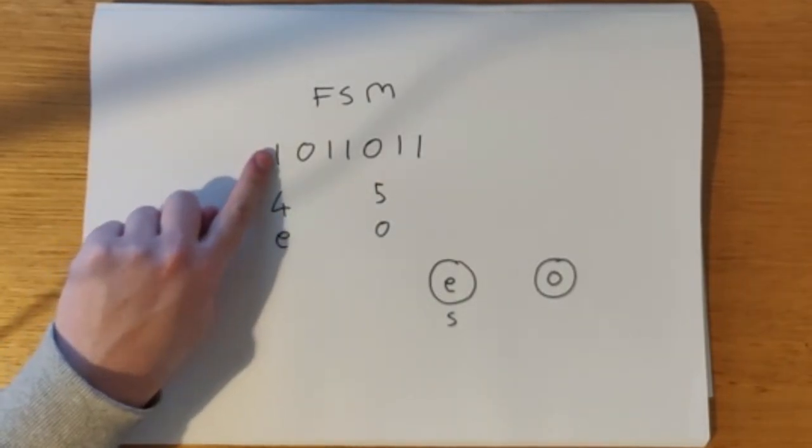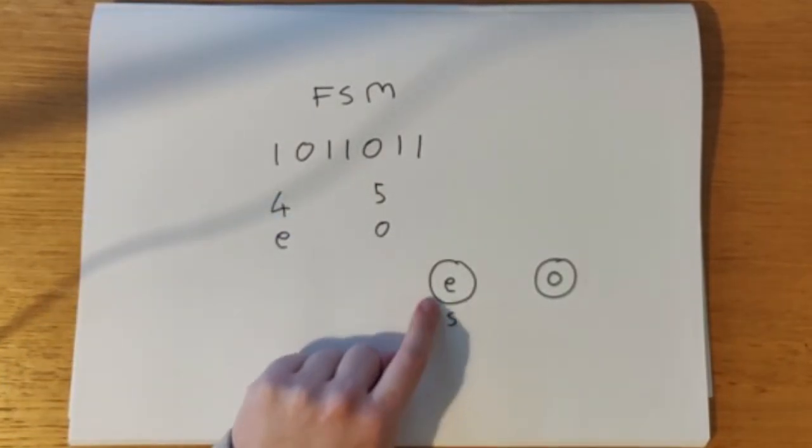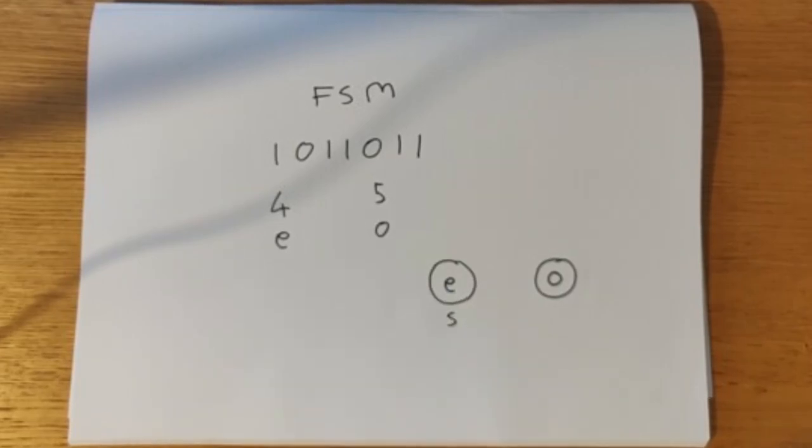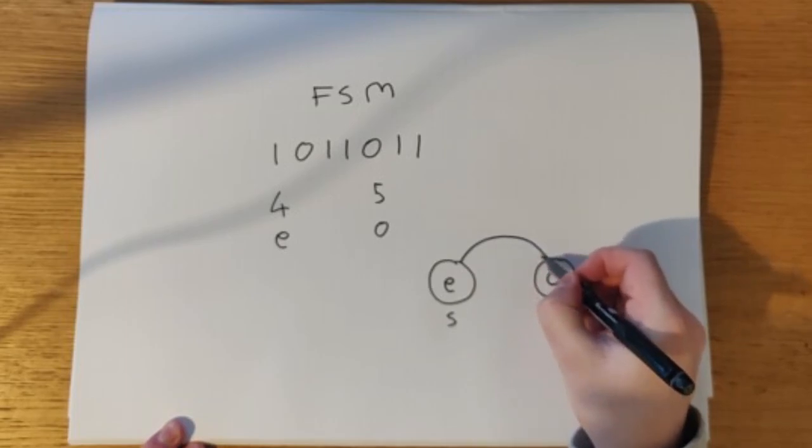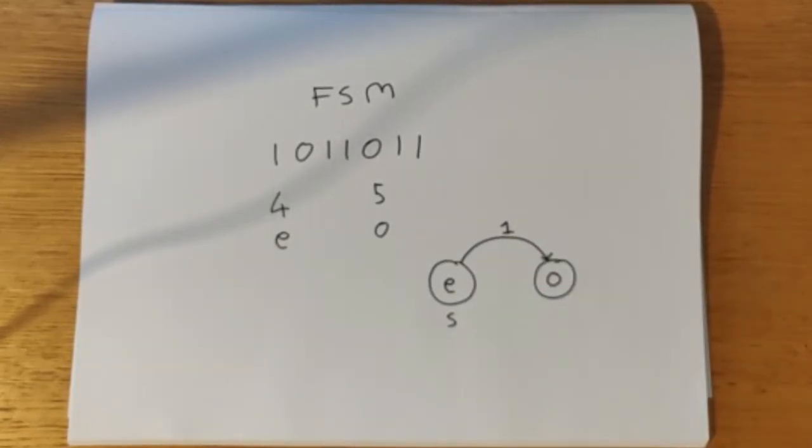So we start at the beginning. We have the number 1. We're currently in the even state. If we're in the even state and we see a number 1, it means that we've received 1, 1. Now 1 is an odd number. So what I'm going to do is I'm going to draw an arrow from even to odd state. And I'm just going to label it with the number 1.